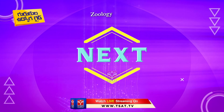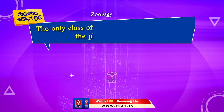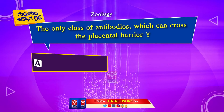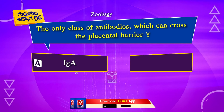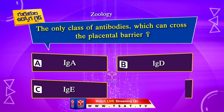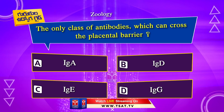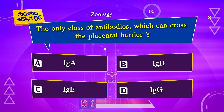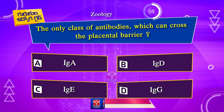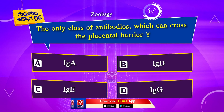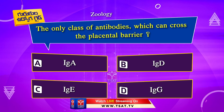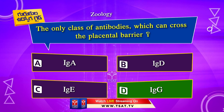Next question. The only class of antibodies which can cross the placental barrier: Option A. IgA. Option B. IgD. Option C. IgE. Option D. IgG. The correct answer is Option D. IgG.